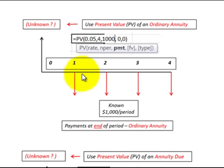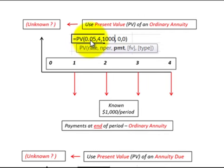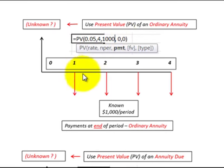Here we have four equal payments and we receive them at the end of each period. So if these were years, we'd be receiving it at the end of each year — year 1, 2, 3, and 4. What we want to do is discount these back and determine their present value. This would be defined as an ordinary annuity, which relates to equal payments received at the end of each period. Using the present value function, you put in your interest rate, number of periods, and then the payment amount. There's no future value here, so we enter 0, and then for the type we enter 0 as well, since 0 corresponds to the end of each period.